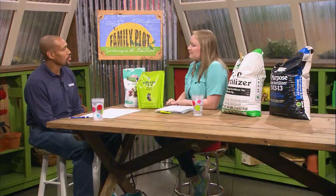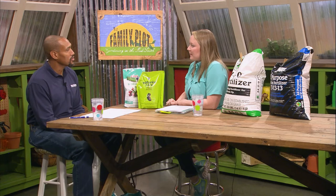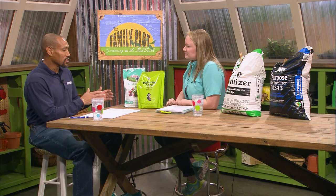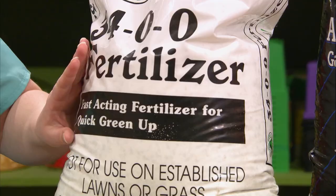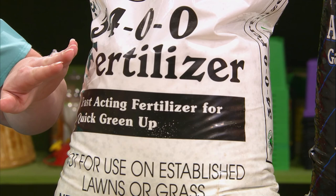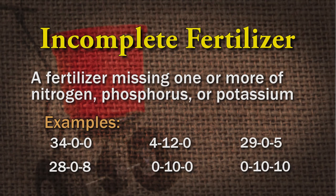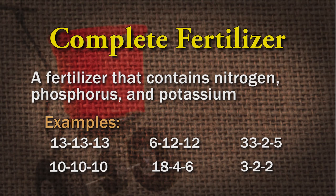What's the difference between complete versus incomplete fertilizer? The 34-0-0 would be considered an incomplete fertilizer because it only has one ingredient — it doesn't have all three. Anything that has a number in every slot would be considered a complete fertilizer, like triple 15 or triple 13. Those would be considered complete fertilizers.